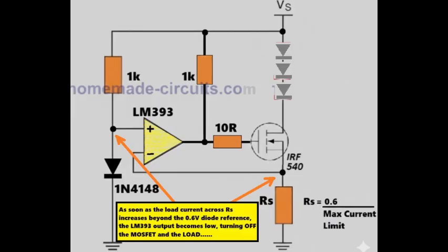When the comparator output changes state, it reduces the gate voltage of the metal oxide semiconductor field effect transistor. Because of this, the transistor starts reducing its conduction. As conduction reduces, the load current automatically drops.